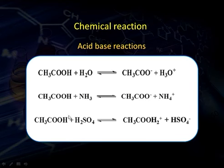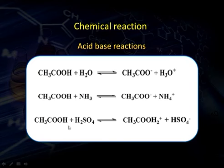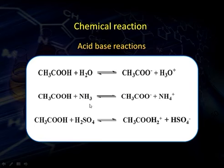When acetic acid is dissolved in sulfuric acid (a very strong mineral acid), the weaker acid behaves as a base in front of the stronger acid. So acetic acid accepts a proton from sulfuric acid, forming CH₃COOH₂⁺ and hydrogen sulfate ion. Thus, the same acid behaves differently in different solvents — as a strong acid in liquid ammonia, and as a base in sulfuric acid.